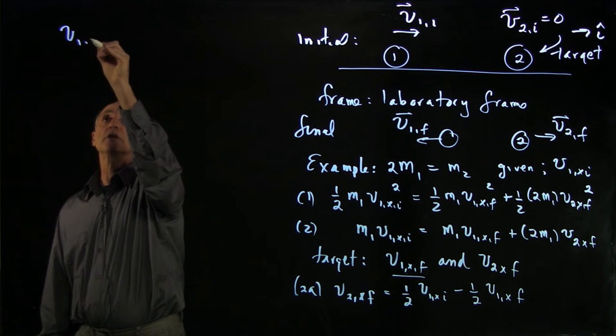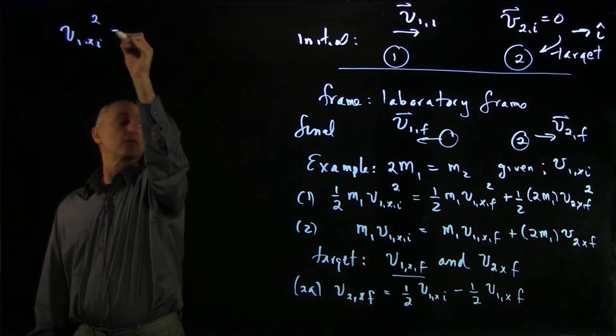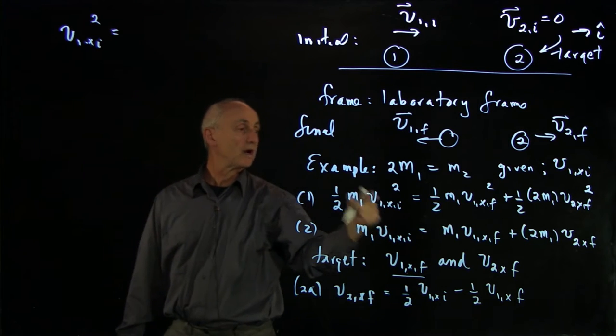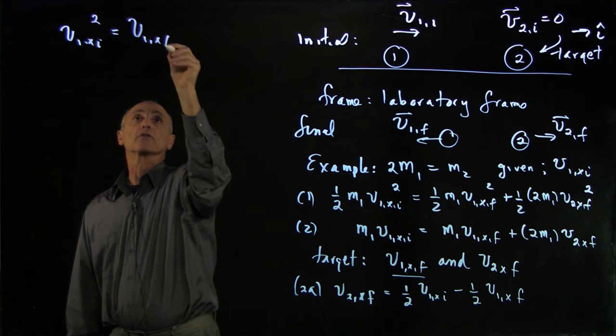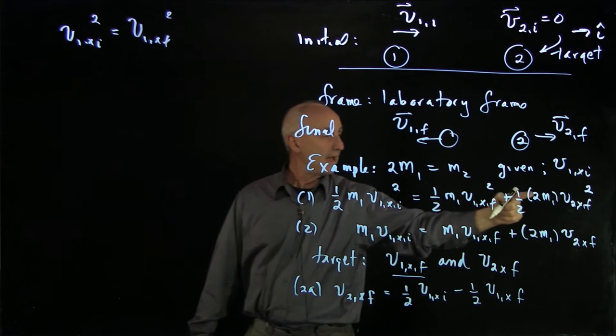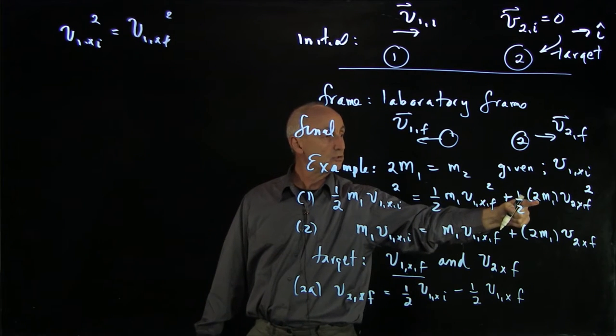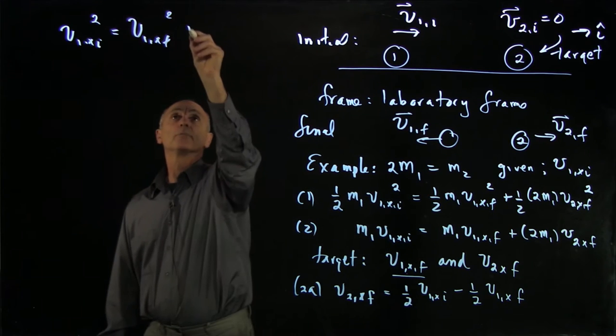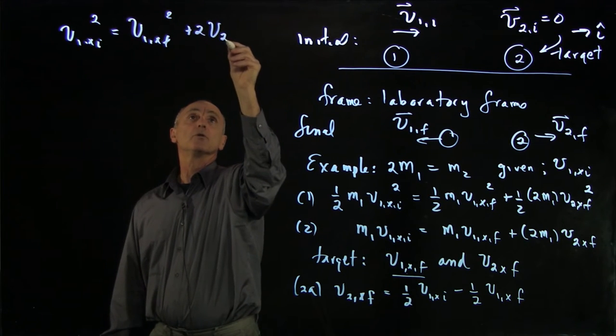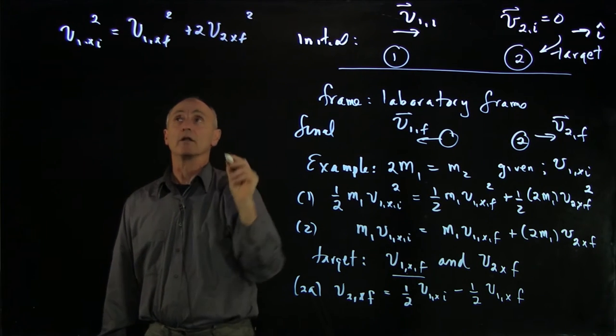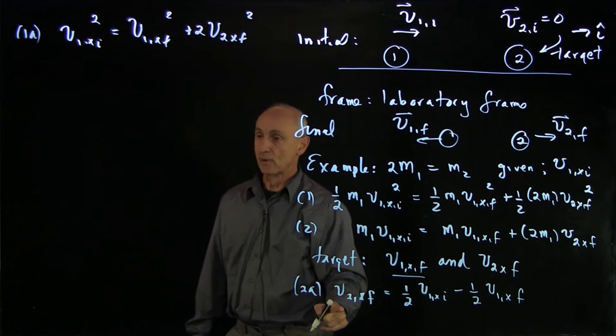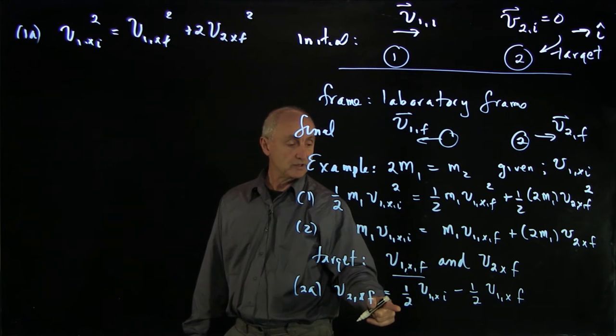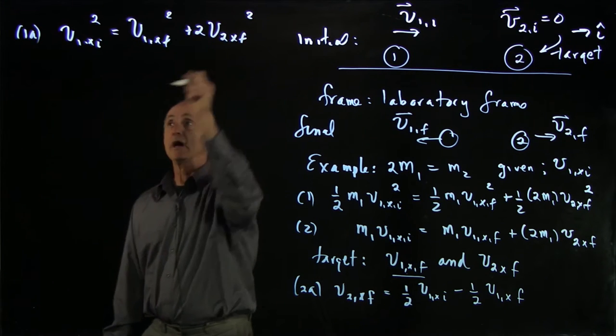The quadratic equation that we're going to be working with is v1x initial squared equals v1x final squared. And I'm dividing through by 2, so I have a factor 2 plus 2 v2x final squared. That's our energy equation.